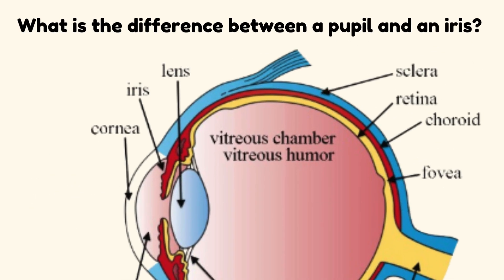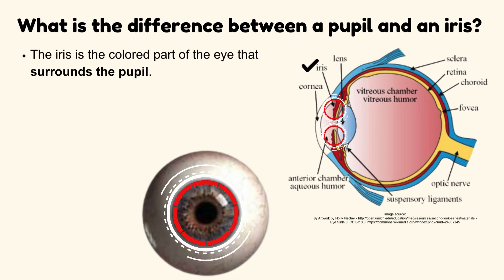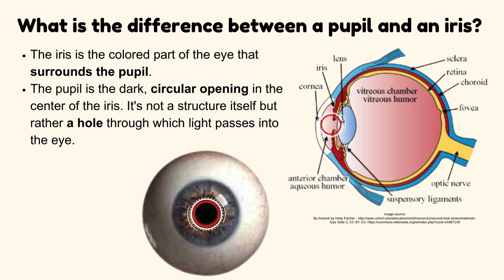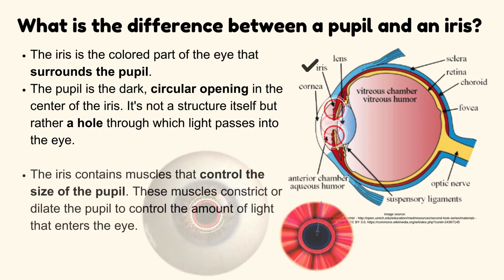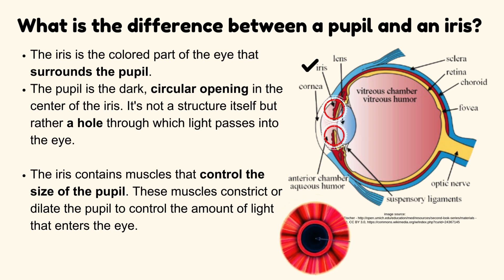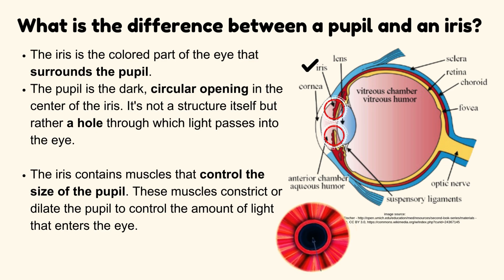What is the difference between a pupil and an iris? The iris is the colored part of the eye that surrounds the pupil. The pupil is the dark, circular opening in the center of the iris — it's not a structure itself, but rather a hole through which light passes into the eye. The iris contains muscles that control the size of the pupil, constricting or dilating it to regulate the amount of light that enters the eye.